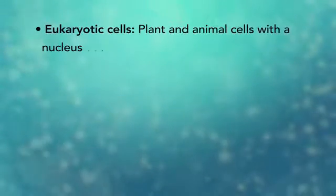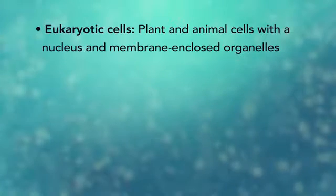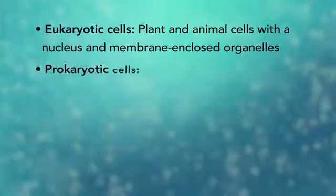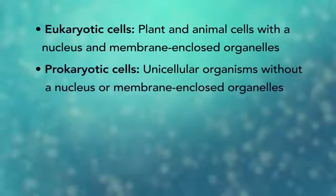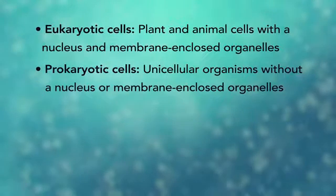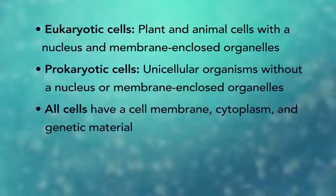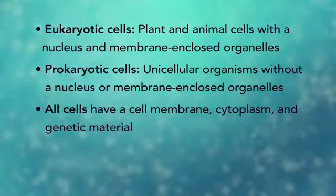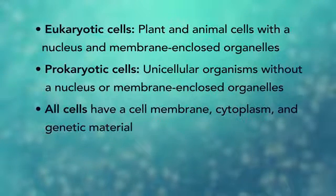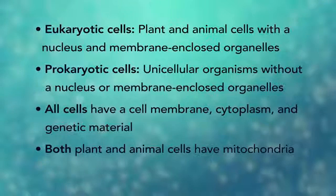In summary, remember eukaryotic cells are plant and animal cells with a nucleus and membrane-enclosed organelles, while prokaryotic cells are unicellular organisms without these things. All cells have a cell membrane, cytoplasm, and genetic material. And even though only plant cells have chloroplasts, both plant and animal cells have mitochondria.